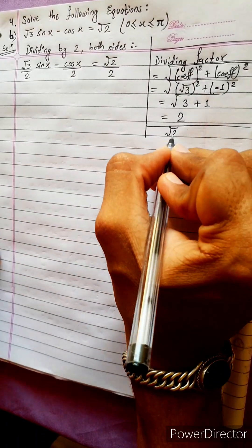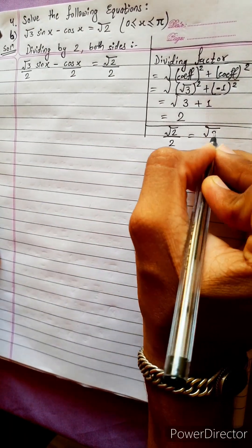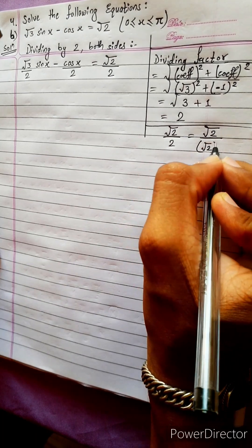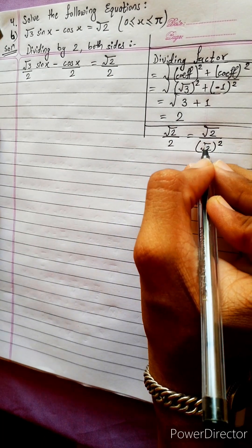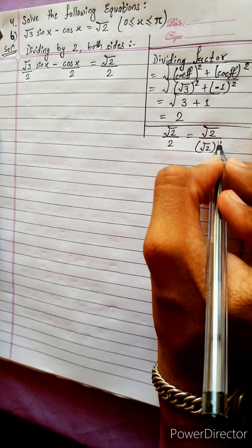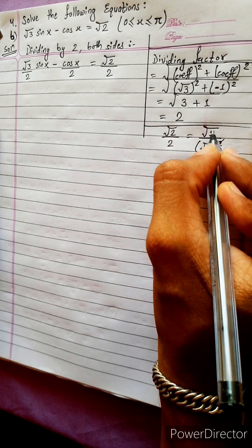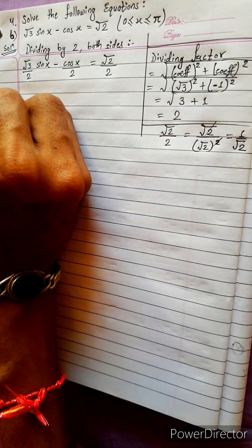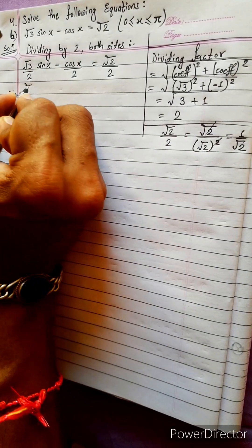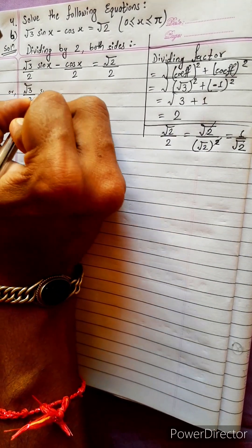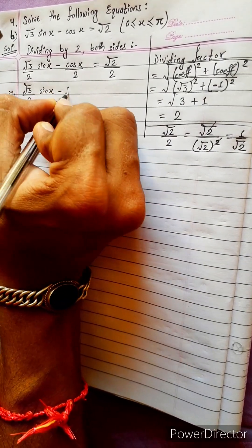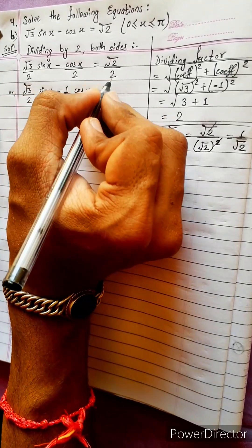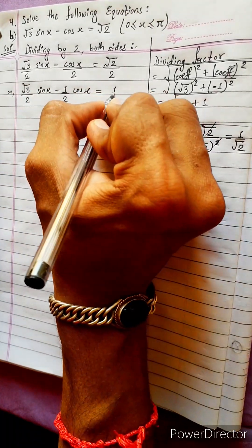Now look here: square root 2 divided by 2. This means square root 2 divided by square root 2 whole squared. This square and root will cancel and we will get 2. But if we cancel this and this, we will get 1 by square root 2. So the same thing — as it is, 1 by 2, cos x equals square root 2 by 2, which means 1 by root 2.